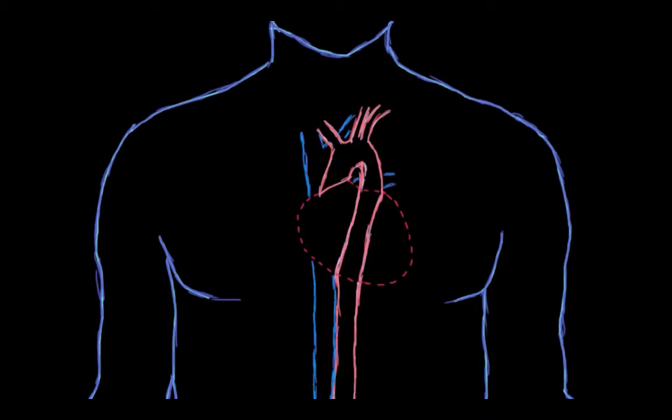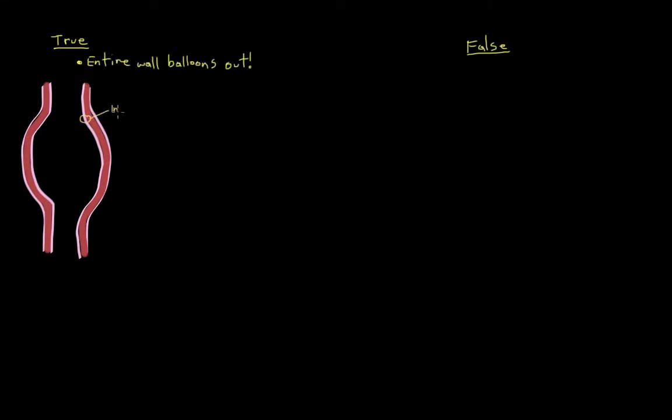Not all aneurysms are created equal though. They're actually classified into true and false types. So in the true type, the entire arterial wall balloons out, and all of the layers of the wall are involved. So the tunicas intima, media, and adventitia, they all get dilated together, and the arterial wall balloons out.